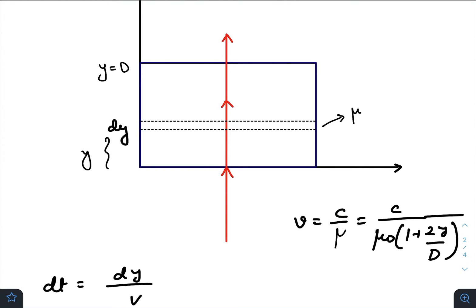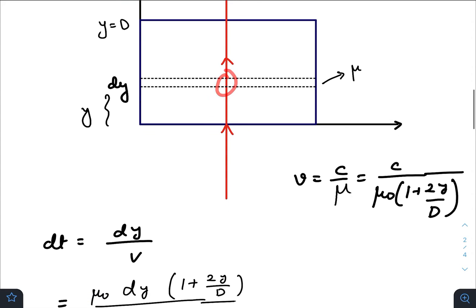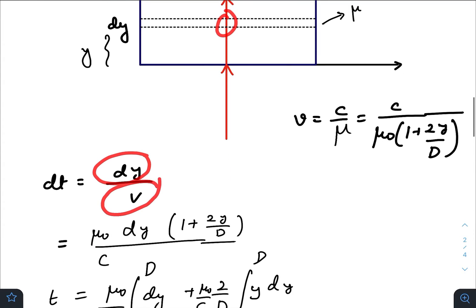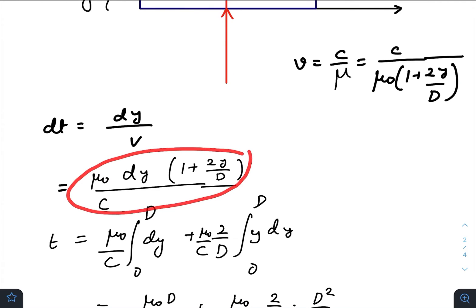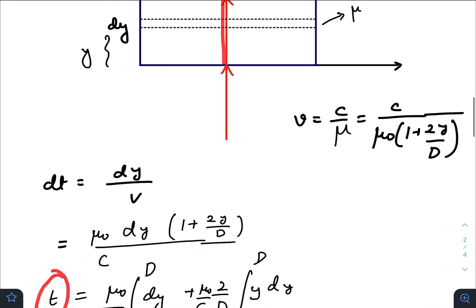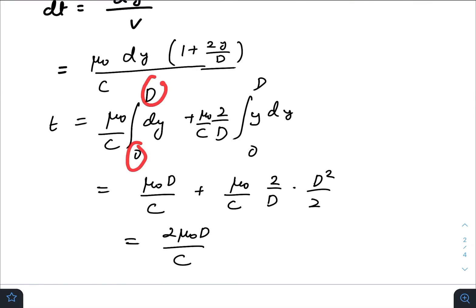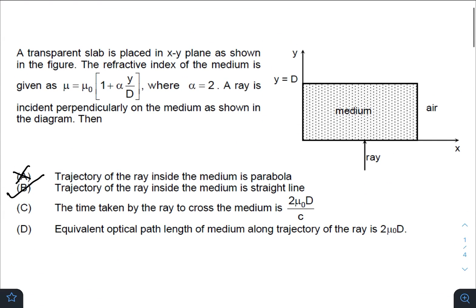The small time taken by the ray to travel this distance would be dy divided by speed. Putting the value here, we get this equation. The total time to travel through the whole slab, we need to integrate from 0 to D. After integrating, we get 2μ₀D/c, so the third option is also correct.